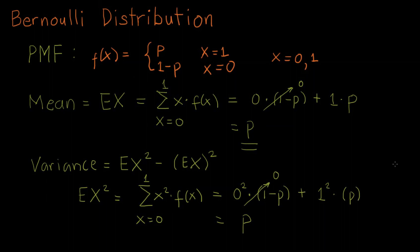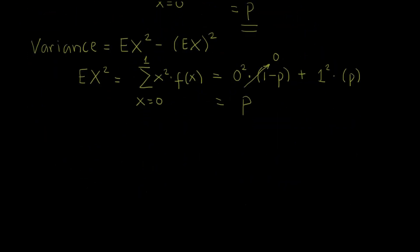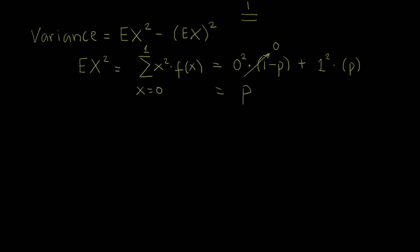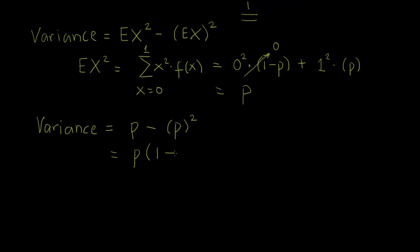Now we can calculate the variance. Variance equals E[X²] minus (E[X])², which is p minus p², and we can simplify this to p times (1 minus p).